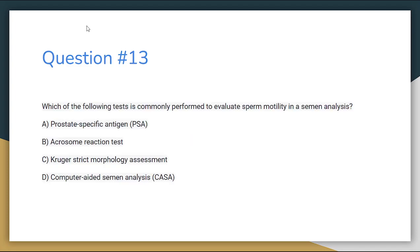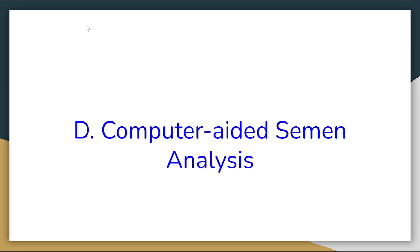Number 13. Which of the following tests is commonly performed to evaluate sperm motility in a semen analysis? Letter A: Prostate specific antigen or PSA. Letter B: Acrosome reaction test. Letter C: Kruger strict morphology assessment. Or letter D: Computer aided semen analysis. The correct answer for number 13 is letter D, Computer aided semen analysis.